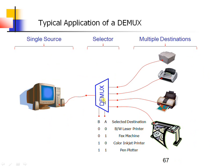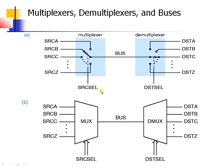A typical application: a computer acting as one target device with 4 other destinations. The selection lines determine which destination the computer routes its output to. In another example, at the source side a multiplexer selects one data input and transmits it through a bus. At the destination, a demultiplexer routes this data to the selected output channel. This is how multiplexers and demultiplexers are used together in communication.